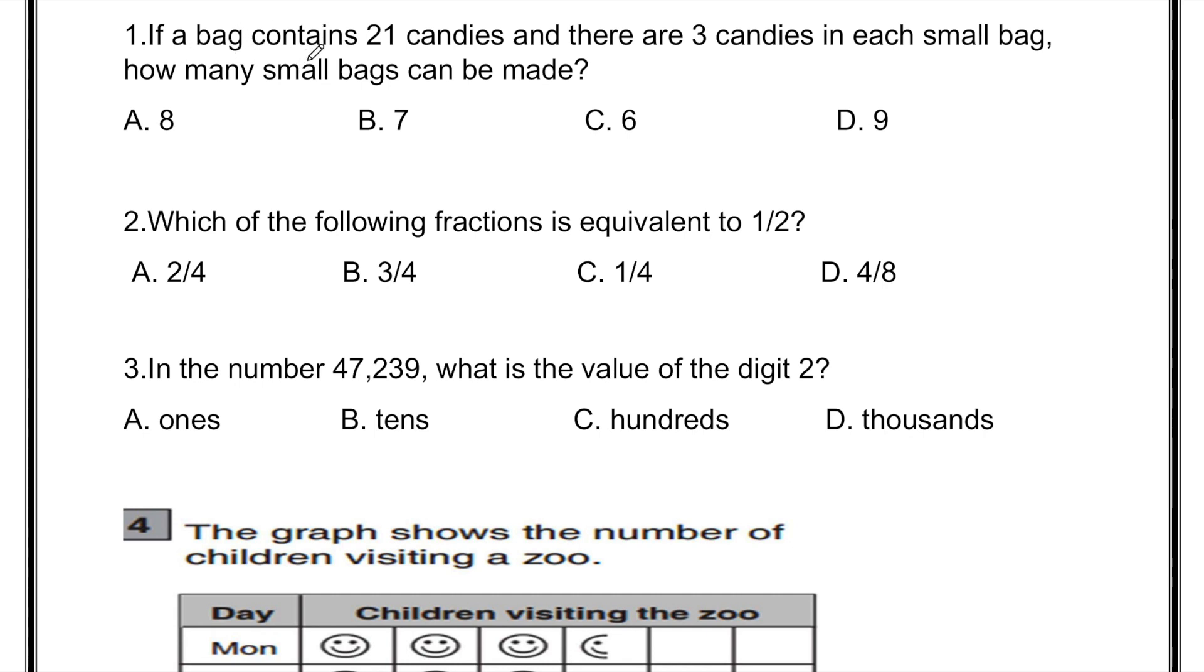If a bag contains 21 candies and there are 3 candies in each small bag, how many small bags can be made? To figure out the answer, we will do division. So we will divide 21 divided by 3.